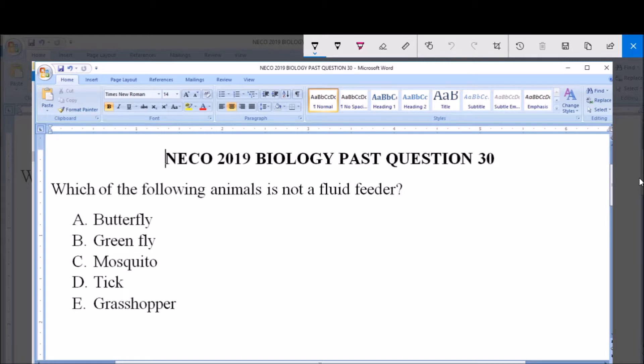Which of the following animals is not a fluid feeder? A. Butterfly, B. Greenfly, C. Mosquito, D. Tick, E. Grasshopper.